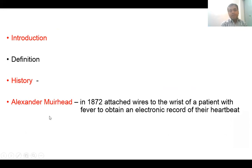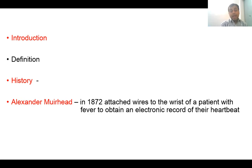The electrocardiogram is defined as the graphical record of the electrical activity of the heart, which gets transferred from the heart with the help of surrounding fluid to the surface of the body. From the surface, this electrical activity is picked up by means of placing various electrodes attached to the body surface and recorded in graphical form.